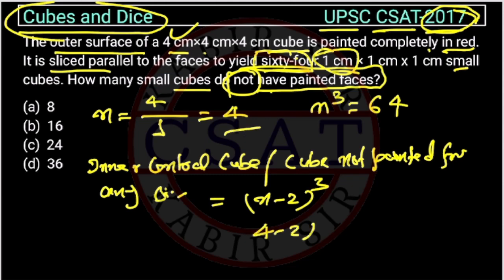So, we will put this value 4 minus 2 cube. This will be 2 cube, so this is 8. So, the answer is option 8.